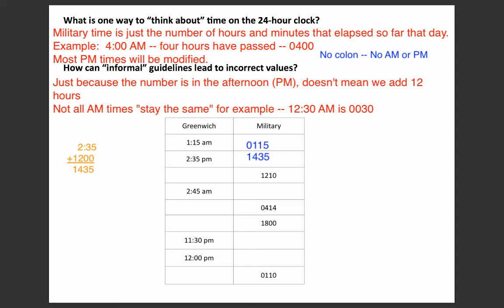Now, military time 1210 — we're 12 hours into the day, 10 minutes into that hour. That's going to be 12:10 p.m. I don't subtract 12, because that would give 0:10, and we're not just 10 minutes into the day — we're 12 hours and 10 minutes in. Next, 2:45 a.m. is early in the morning; only 2 hours and 45 minutes have passed, so this is 0245. Military time 0414 is 4 hours and 14 minutes into the day, so that's 4:14 a.m.